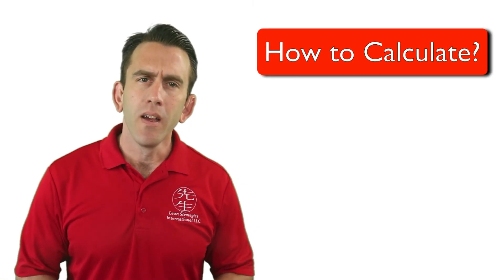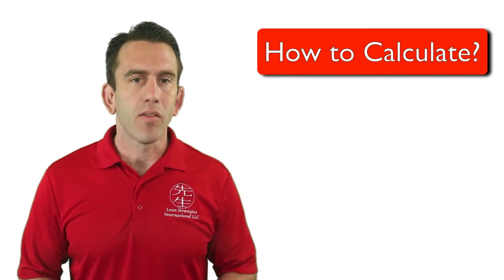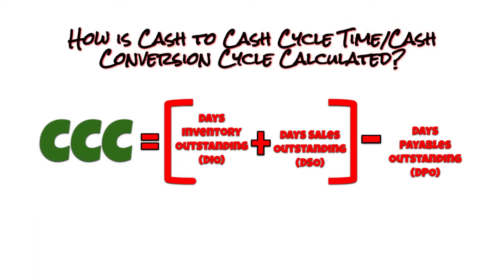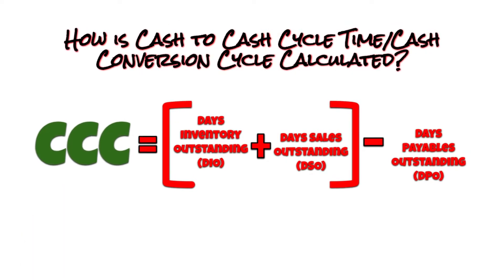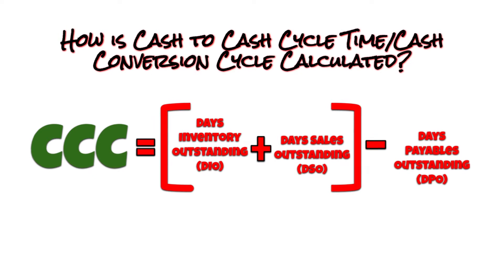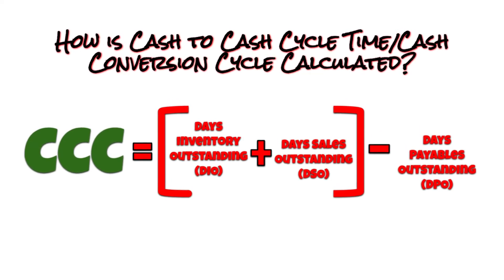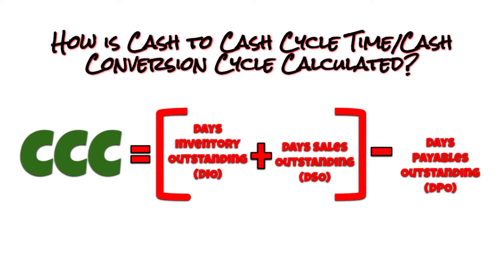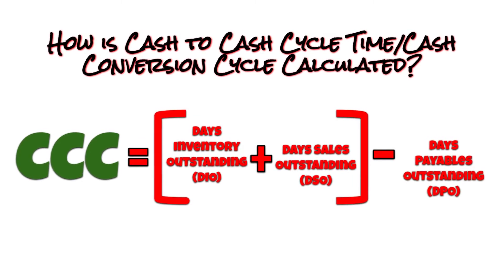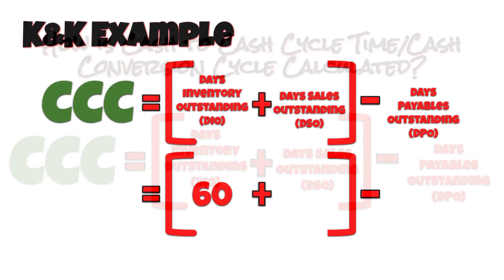The cash conversion cycle is calculated by adding days inventory outstanding and days sales outstanding, and then subtracting days payable outstanding. Let's look at an example.